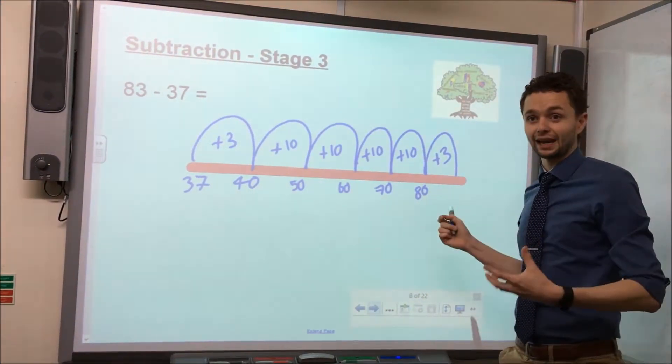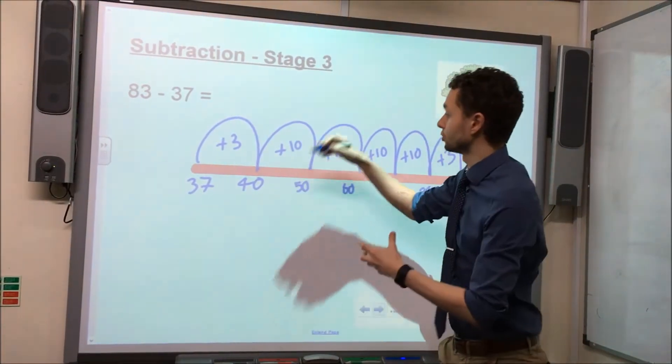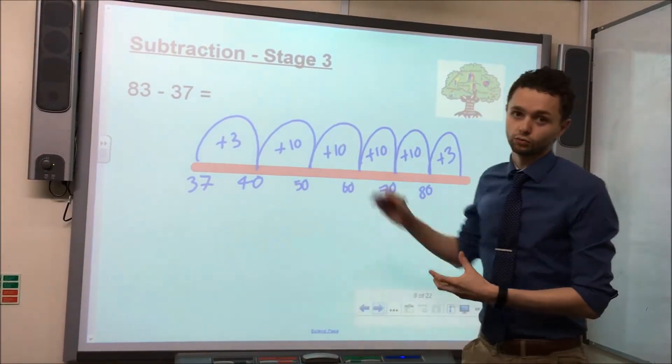As you can see, this method is easier compared to Stage 2 in terms of large numbers because we're taking jumps of 10 rather than single jumps of 1.